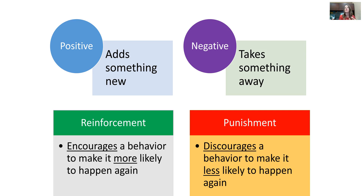Anytime you see reinforcement, that means you're trying to get that behavior to continue or to happen again. Reinforcement is meant to encourage a behavior, making it more likely to happen again. And punishment is the opposite — it's supposed to discourage a behavior, to make it less likely to happen again.